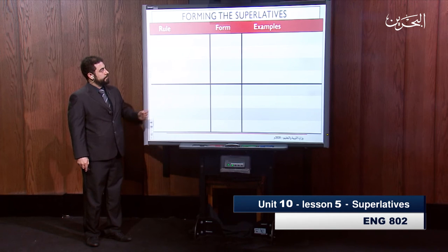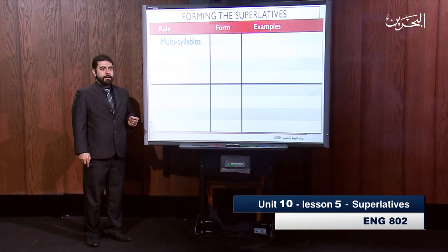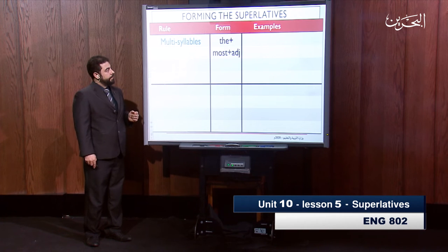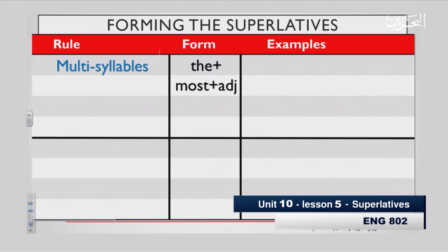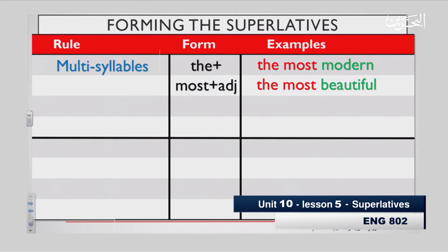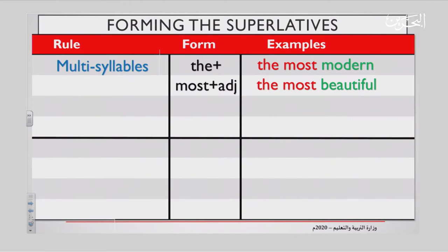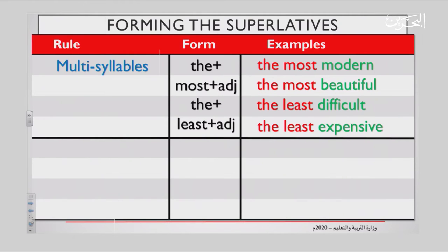Now we go to the fifth rule: multi-syllable adjectives — adjectives with more than one syllable — you use the most before the adjective. For example, modern is a two-syllable adjective, you say the most modern. Beautiful is a three-syllable adjective, you say the most beautiful. Now, most is positive. You can use the negative, which is least — you say the least difficult. Difficult is a three-syllable adjective. The least expensive means the cheapest.